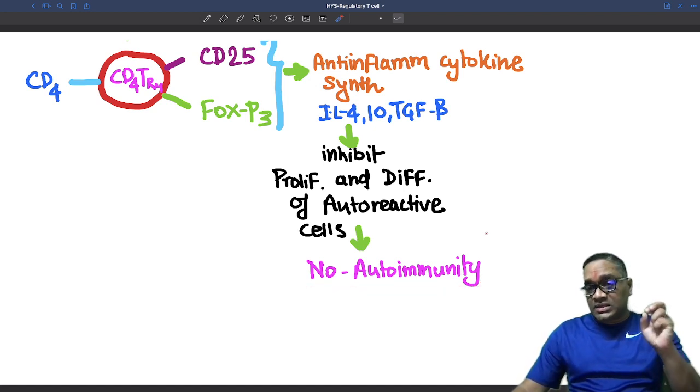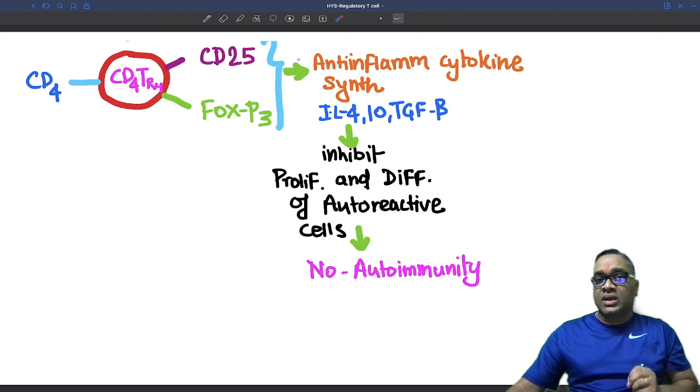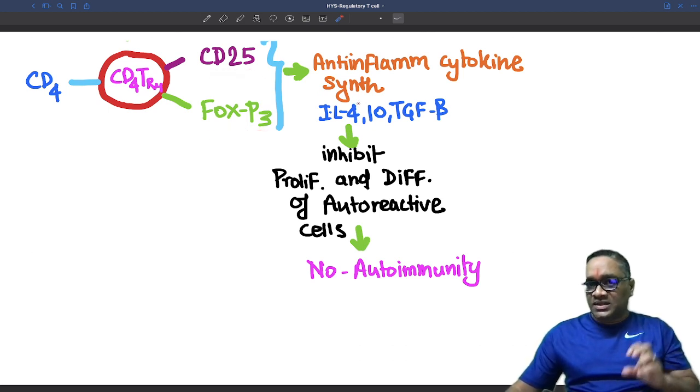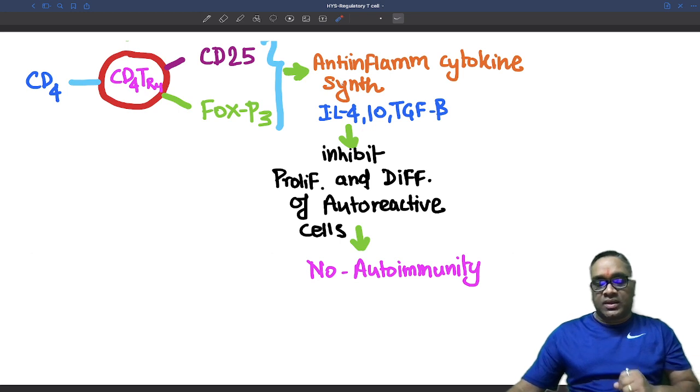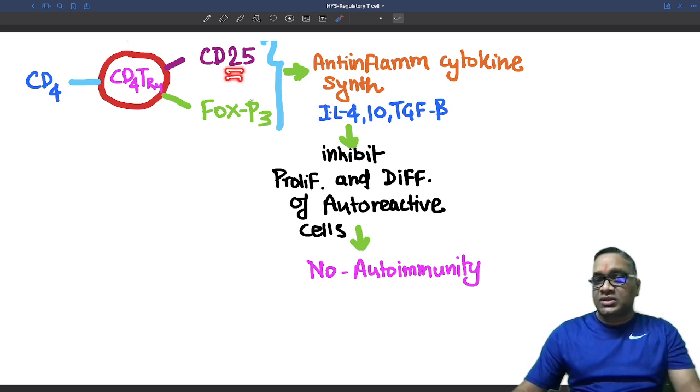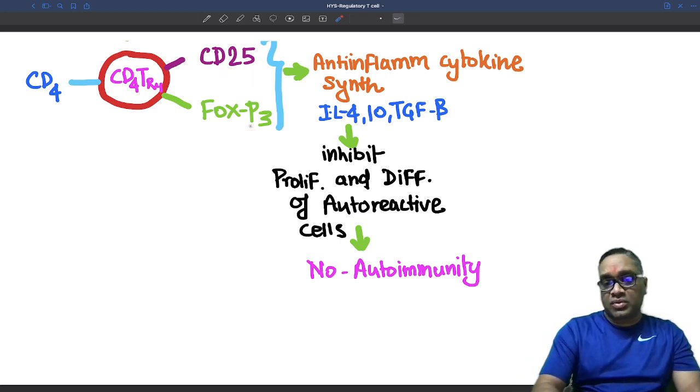So regulatory T-cells prevent autoimmunity by using CD25 and FOXP3 genes and synthesizing anti-inflammatory cytokines. Whenever there is a mutation in these two genes, you will see autoimmune disorders in the patient.